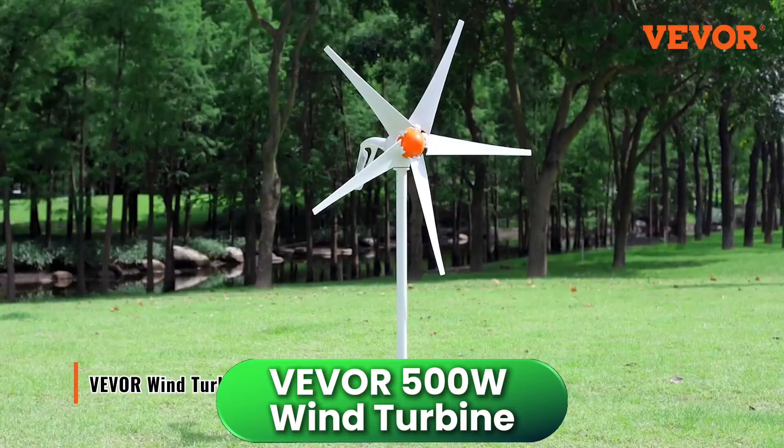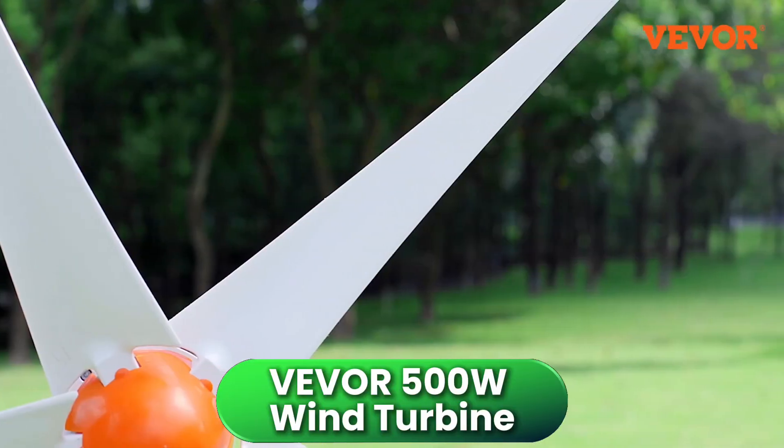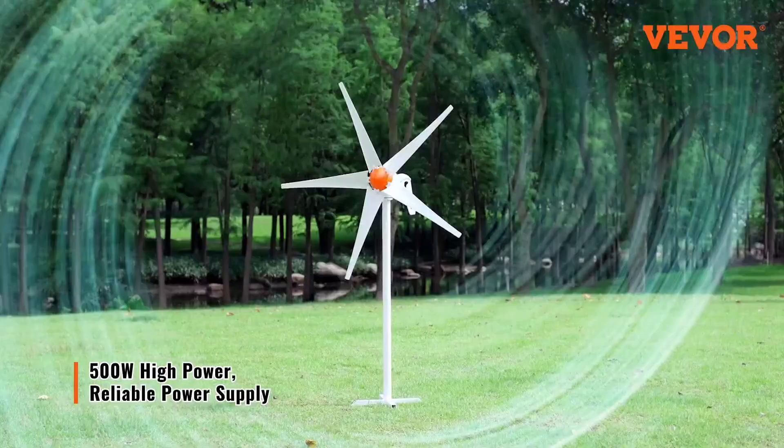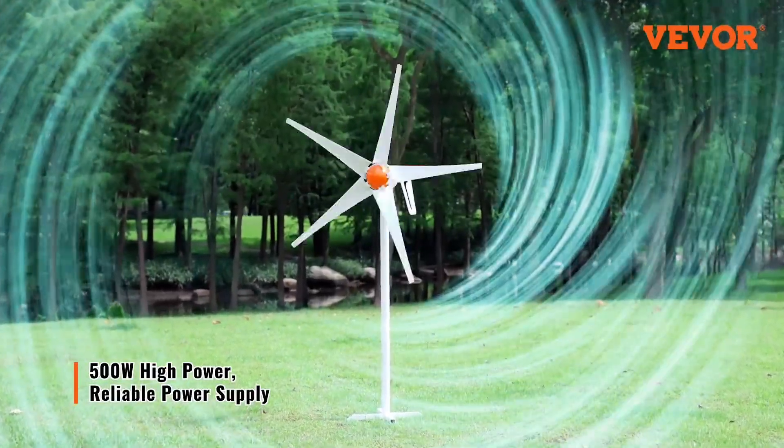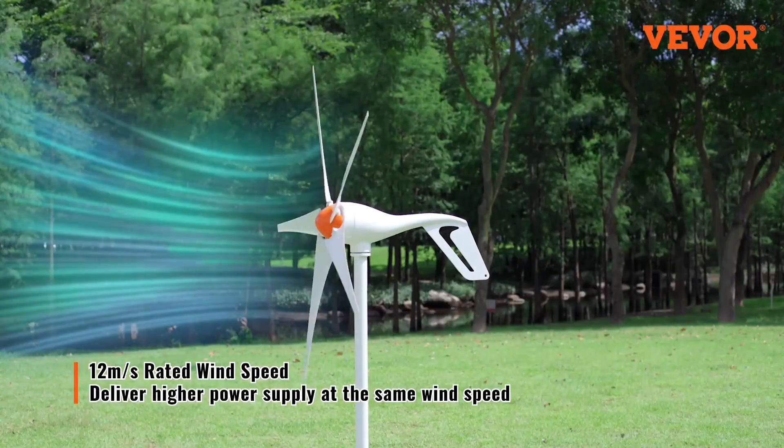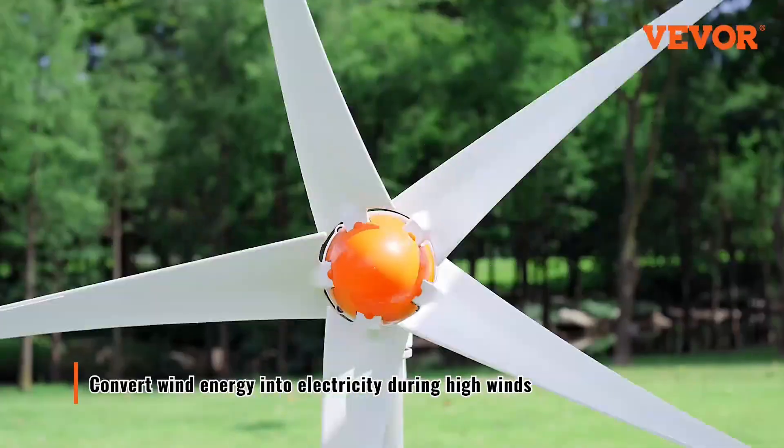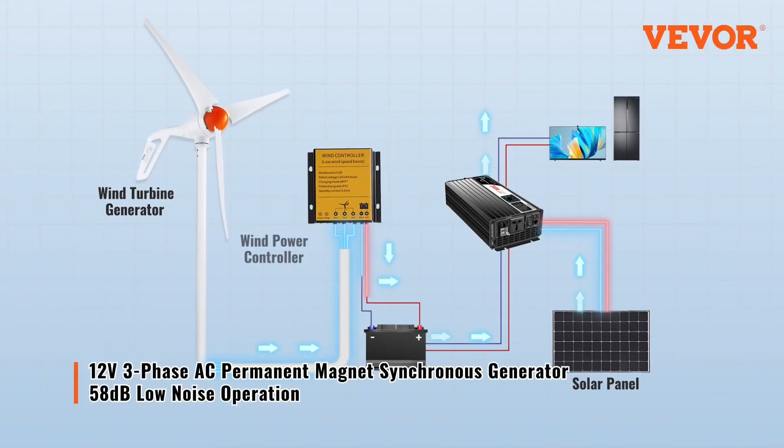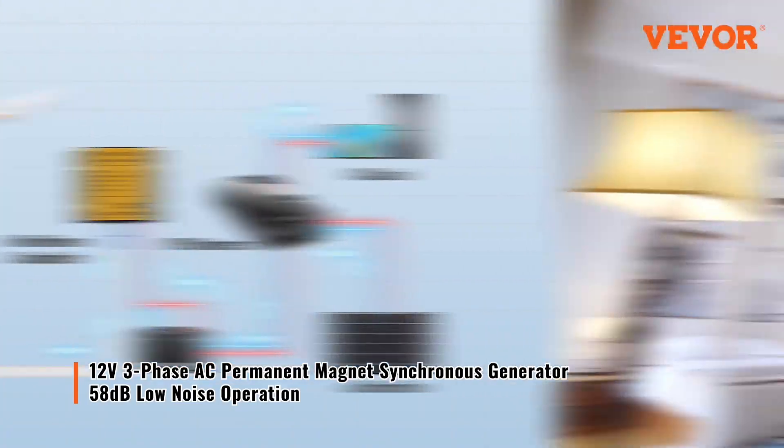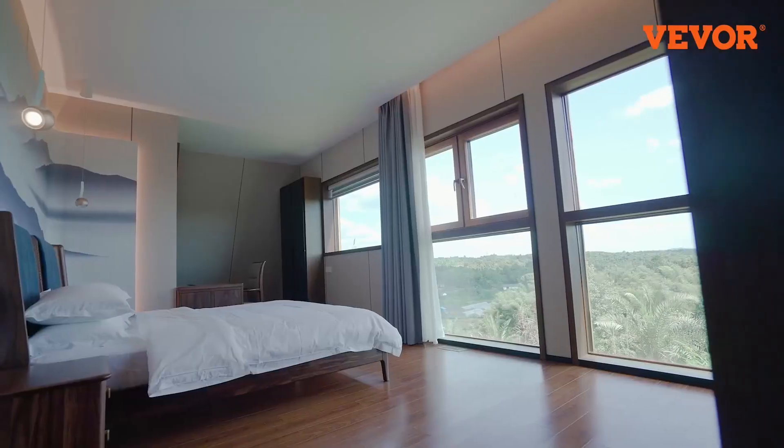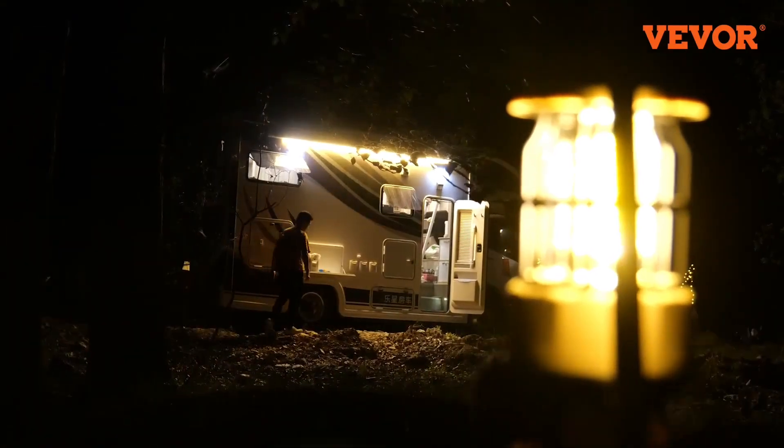Starting off with the Vivore 500W wind turbine, this unit is a great entry point into home wind energy. It features a five-blade horizontal axis design and comes with an MPPT controller for improved efficiency. One thing I appreciate about this model is its low startup wind speed, just 2.5 meters per second, so it'll start generating sooner than many competitors in light breezes. The build is lightweight and compact, making it easy to mount on a rooftop or a small pole setup.